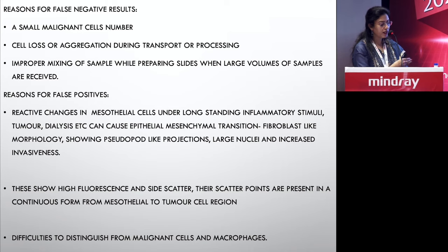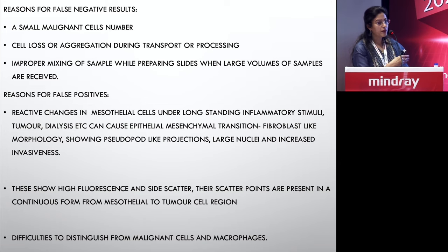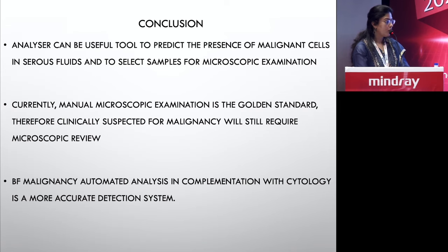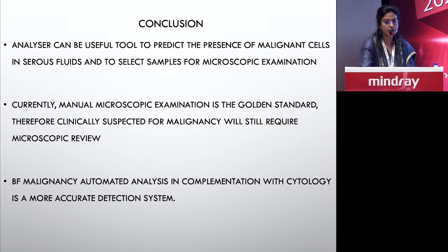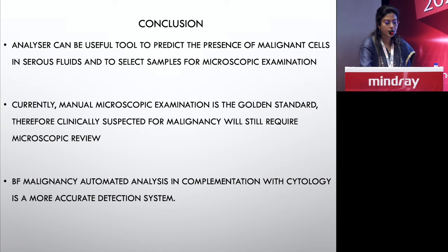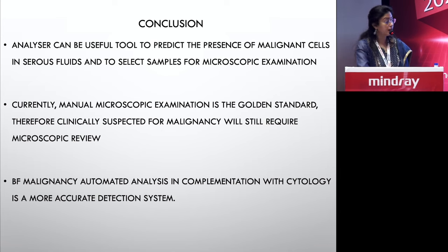The Mindray BC6800 adds a new parameter — a dedicated malignant cell category — with greater ability to distinguish reactive mesothelial cells from malignant cells, shown as a separate population on the scatter plot. In conclusion, even though we cannot totally distinguish malignant from reactive mesothelial cells, when the analyzer shows a high fluorescent area, it should raise an index of suspicion. This should prompt you to perform cytospin smears and additional cell block evaluation, and allows you to inform the clinician in advance about a possible malignant effusion.